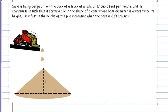Let's work through the following related rates problem together. Sand is being dumped from the back of a truck at a rate of 17 cubic feet per minute, and its coarseness is such that it forms a pile in the shape of a cone whose base diameter is always twice its height. How fast is the height of the pile increasing when the base is six feet around?